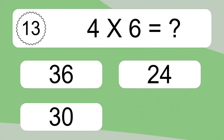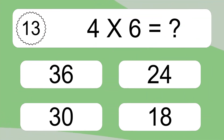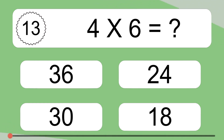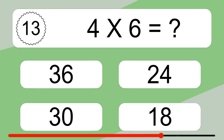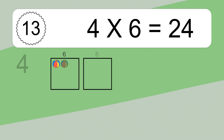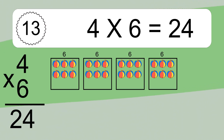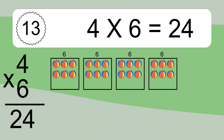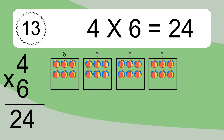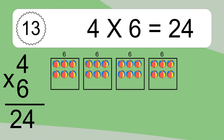4 times 6 equals what? We have 4 boxes, and each box has 6 colorful balls inside. If you count all the balls in all the boxes together, you will have 4 times 6 balls. This equals 24 balls.